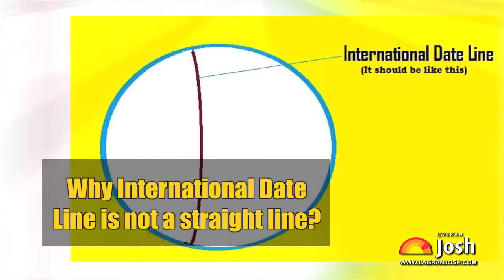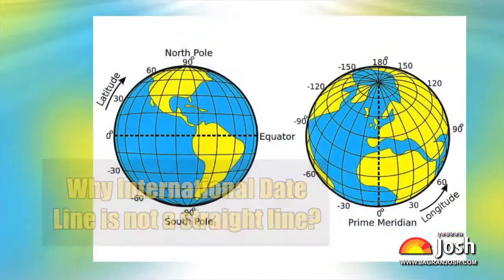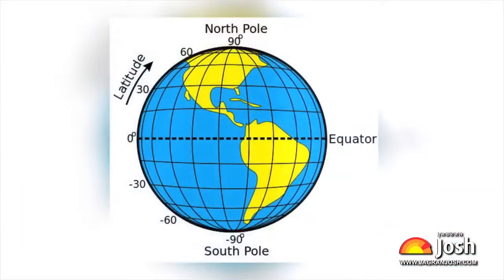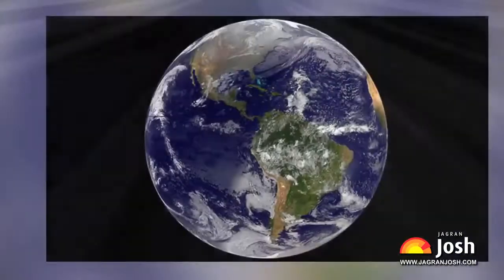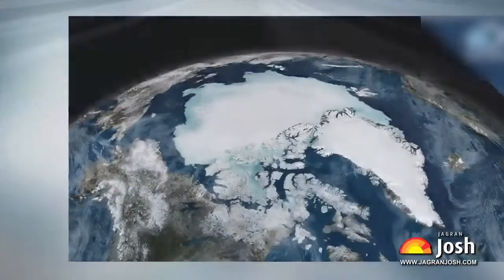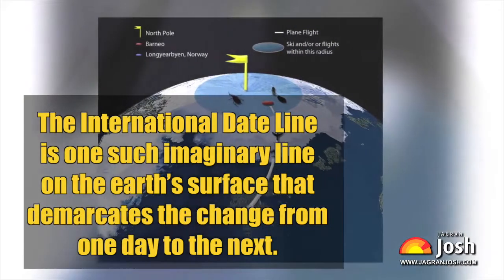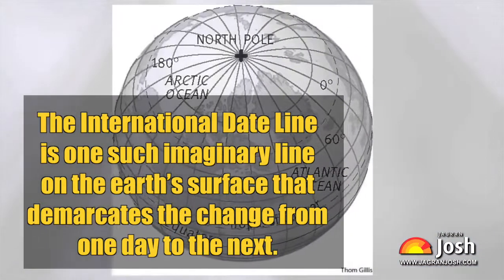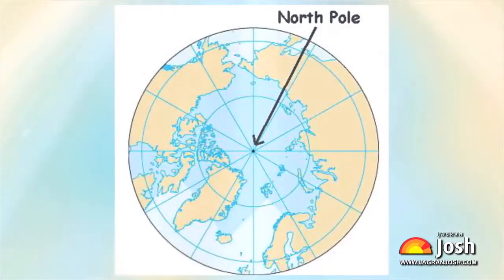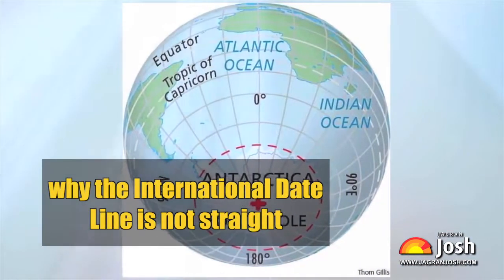Why is the international date line not a straight line? As you know, the earth's shape is spheroid. This makes it difficult to determine time, date, and locate places on the earth. To address this problem, we draw imaginary lines such as longitude, latitude, equator, and prime meridian for navigation and geographical information. The international date line is one such imaginary line on the earth's surface that demarcates the change from one day to the next. In this video, we will discuss why the international date line is not straight.